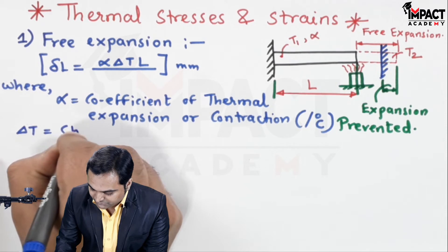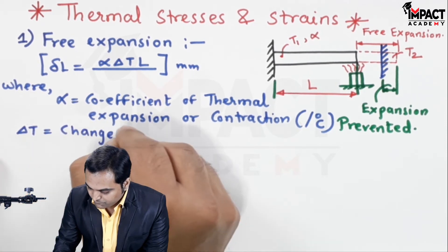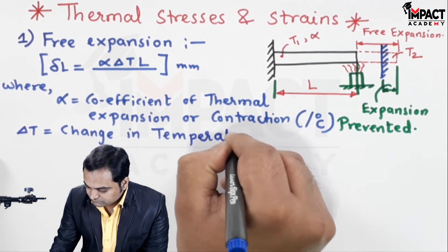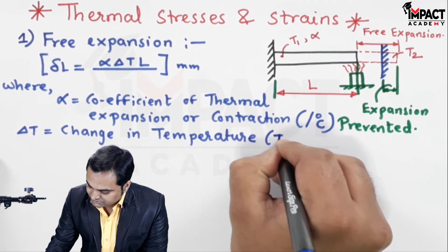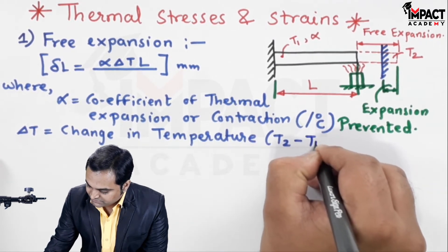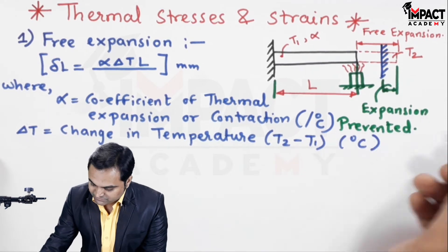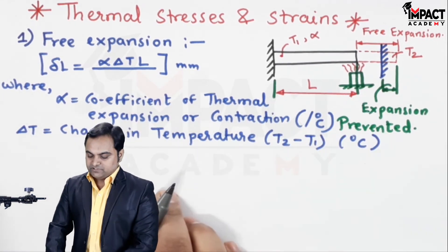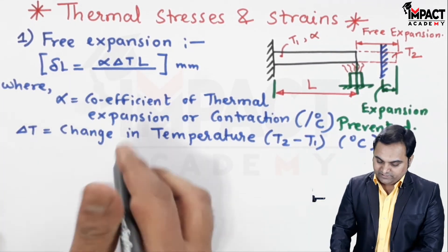Delta T is change in temperature for the rod. That change in temperature is final temperature minus the initial temperature, T2 minus T1. Unit is degree Celsius, and L is the length of this bar.